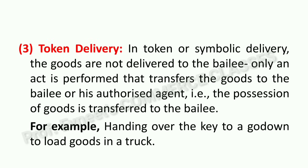Next is token delivery, also called symbolic delivery. In this type, goods are not actually delivered to the bailee. Only an act is performed which shows that goods have been transferred to the bailee or his agent — that is, possession of the goods is transferred symbolically. For example, handing over the key to a godown so that goods can be loaded into a truck. You cannot physically hand over the entire godown, so you hand over the key — this constitutes delivery of possession. This is token or symbolic delivery.